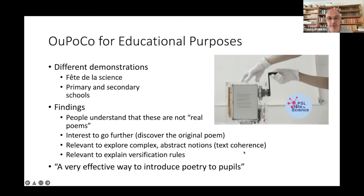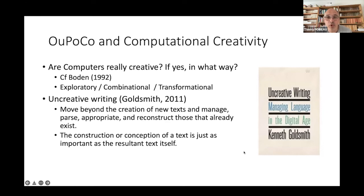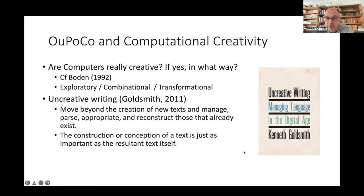It's also a way to explain versification explicitly. Different teachers say it was a very effective way to introduce poetry to pupils. Sometimes they are a bit bored, but this was a way to show that poetry is not only something old — it's also fun and a way to introduce the old world of poetry to new audiences. And lastly, it's a way to explore computational creativity. There are big questions people have asked since the beginning of computer science: are computers really creative, and if yes, in what way? You have people like Kenneth Goldsmith who wrote about uncreative writing — the idea is to move beyond the creation of new texts and instead appropriate and reconstruct texts that already exist, to take what already exists to produce new poems and new forms of literature, and to think about to what extent we can say that a computer is creative.